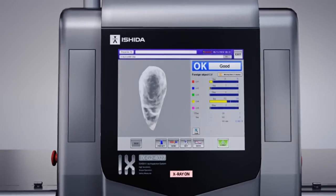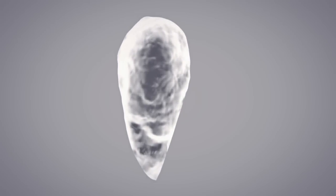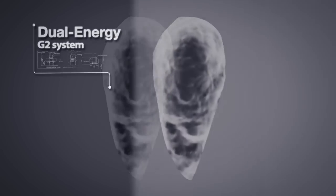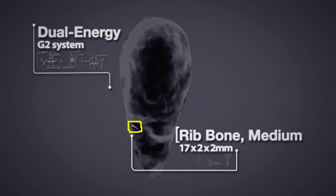To get the best accuracy for poultry inspection, Ishida recommends the Dual Energy G2 system which can achieve the highest detection rates and pinpoint even the smallest bones.